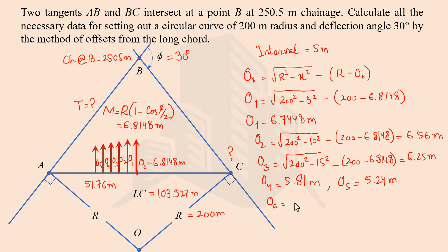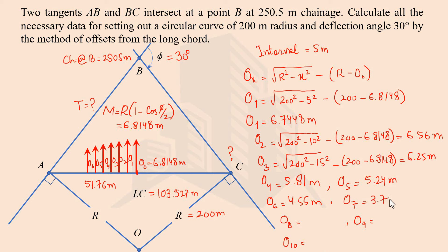Continuing the offset calculations: O₆ at x = 30 gives 4.55 m. O₇ at x = 35 gives 3.72 m. O₈ at x = 40 gives 2.77 m. O₉ at x = 45 gives 1.6865 m. O₁₀ at x = 50 gives 0.46 m. When x = 51.76 meters (point A), the offset becomes zero. Joining all these offset points together traces the circular curve.